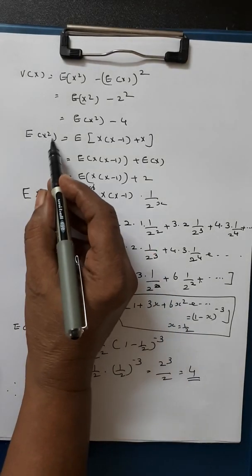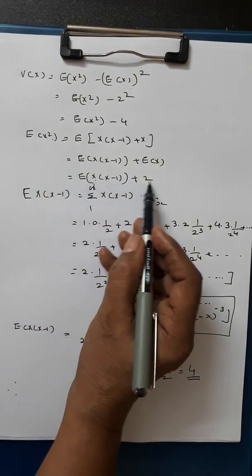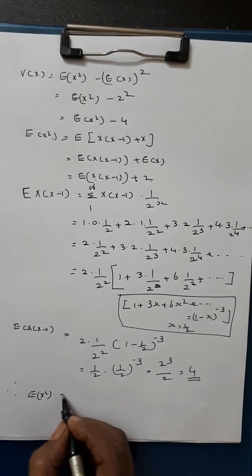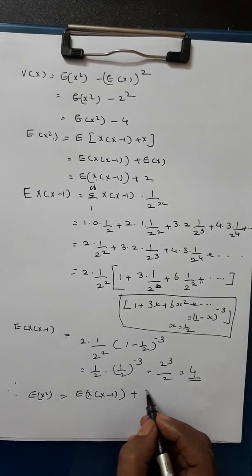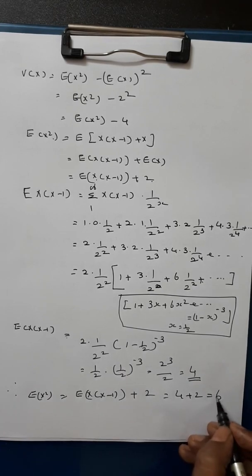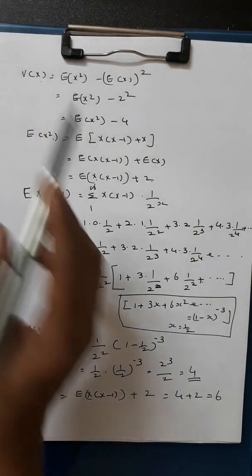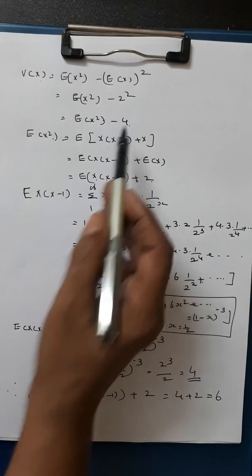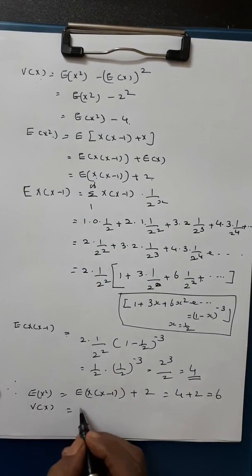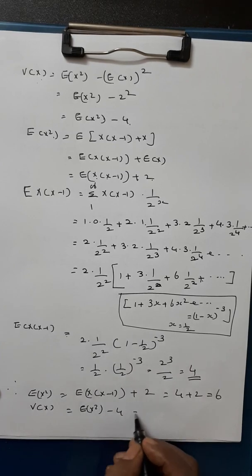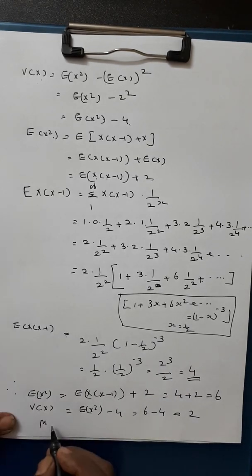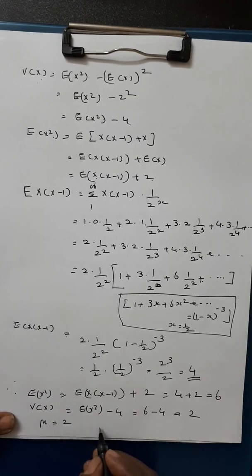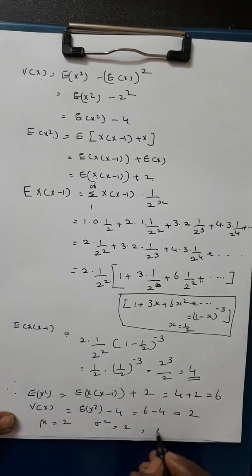So E(x squared) equals E of x(x minus 1) plus E(x), which is 4 plus 2, equal to 6. Therefore, variance of x equals E(x squared) minus 4, that is 6 minus 4, equal to 2. Therefore, we have mean mu equals 2 and sigma squared equals 2, so sigma equals root 2.